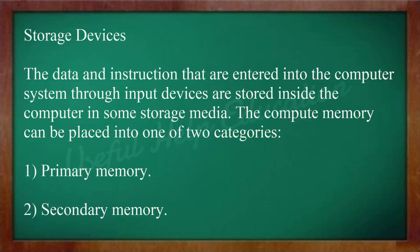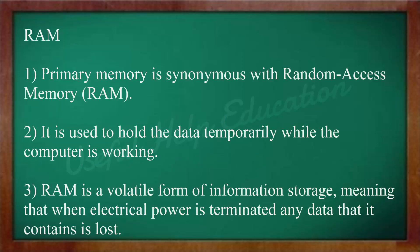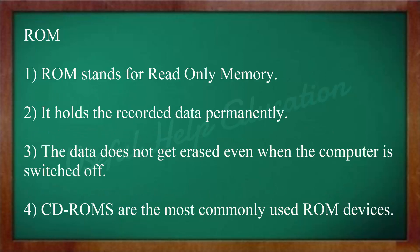Storage devices: Data and instructions entered into the computer through input devices are stored inside the computer in some storage media. Computer memory can be placed into one of two categories: Primary memory and Secondary memory. Primary memory, often called main memory, is present on the motherboard. RAM (Random Access Memory) is used to hold data temporarily while the computer is working. RAM is a volatile form of information storage, meaning that when electrical power is terminated, any data it contains is lost. ROM (Read-Only Memory) holds recorded data permanently — the data does not get erased even when the computer is switched off. CD-ROMs are the most commonly used ROM devices.